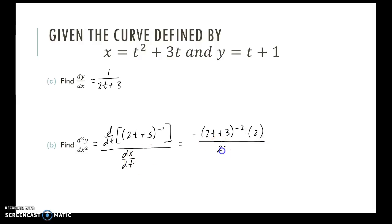So using my power and chain rule, negative 2t plus 3 to the negative second power times the derivative of the inside, all divided by dx/dt is 2t plus 3. So now I'm making this exponent positive by bringing it to the denominator, I get my second derivative is negative 2 divided by 2t plus 3 quantity cubed.